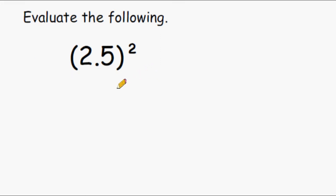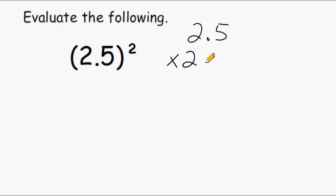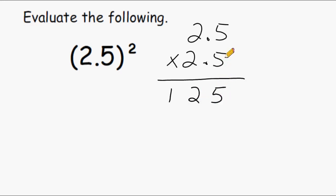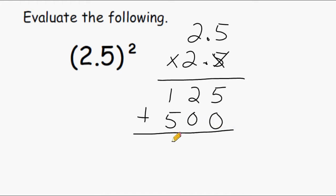Now for this problem we have to take 2.5 and raise that to the second power. Anything to the second power is just a number multiplied by itself, so we have to take 2.5 and multiply that by 2.5. We start with 5 multiplied by 25, which is 125. We put a placeholder, then multiply 2 times 25, which is 50. Adding the digits together gives us a total of 625.